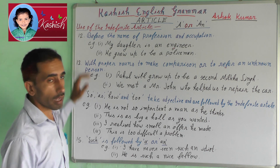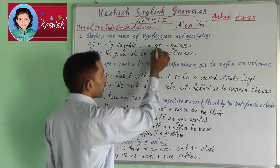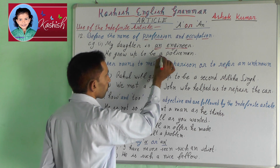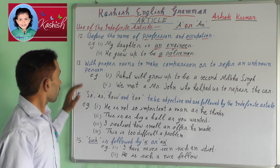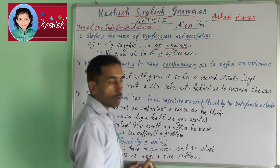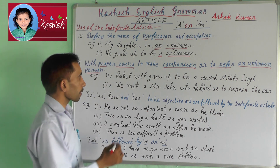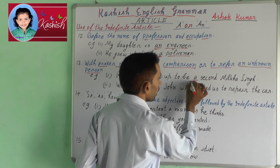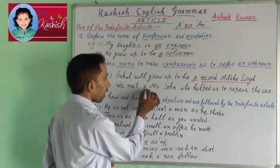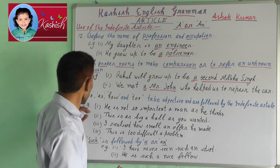Before the name of a profession and occupation. For example: my daughter is an engineer; he grew up to be a policeman. Thirteenth, with proper nouns to make a comparison or to refer to an unknown person. For example: Rahul will grow up to be a second Milkha Singh; we met a Mr. John, who helped us to repair the car.